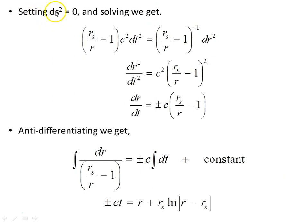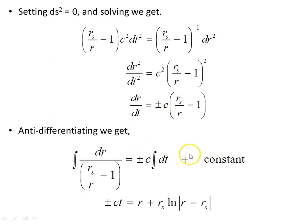Setting ds² = 0 for photons and solving the simplified line element inside the Schwarzschild radius, we rearrange and get a new expression for dr/dt. Integrating this as in the previous video, we obtain solutions for inward and outgoing light rays — photon geodesics — inside the Schwarzschild radius, where rs is the Schwarzschild radius.